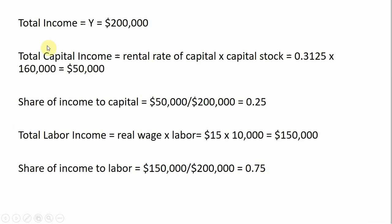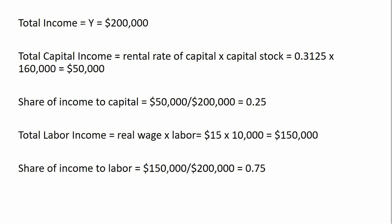We have an economy with real GDP of $200,000 in total income. The total capital income — the amount going to capital — is the rental rate of capital times the capital stock: 0.3125 times $160,000, so capital receives $50,000. As a share, $50,000 divided by $200,000 is 0.25, which is exactly the exponent that K is raised to in our production function.